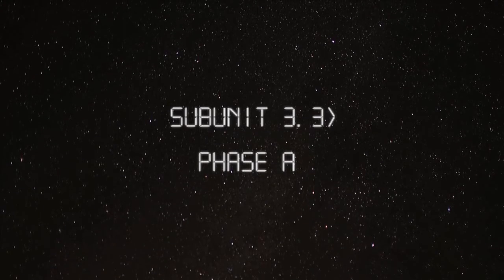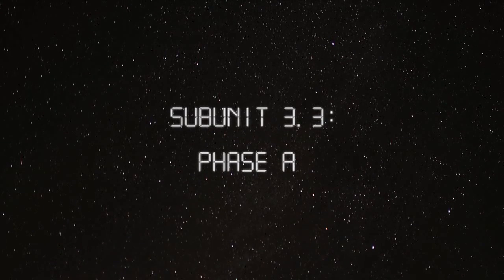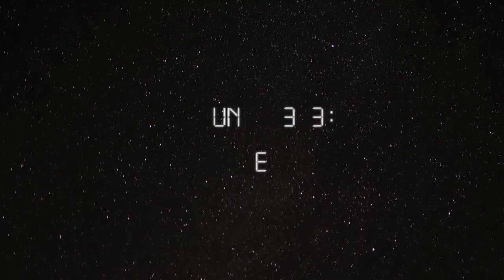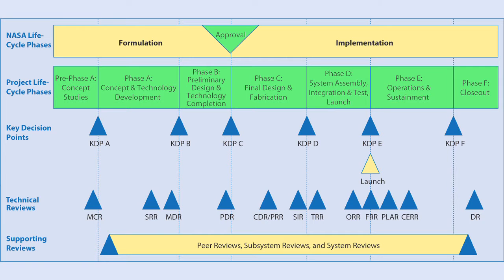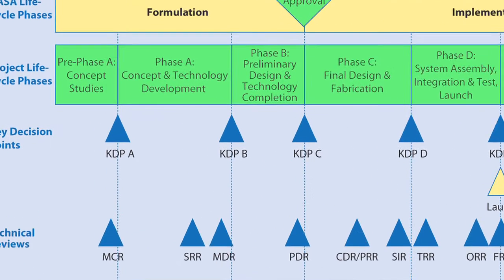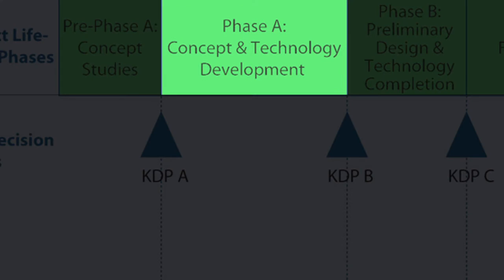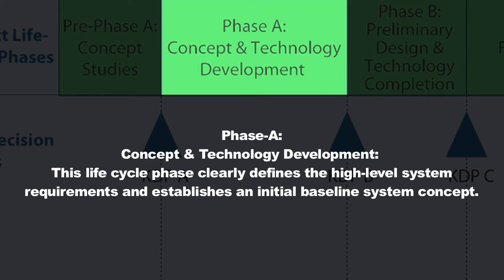Subunit 3.3, Phase A. Let's talk about what happens during Phase A. At this point, you've got some kind of baseline system requirements that you're developing, and in Phase A, you're going to really try to work on taking those high-level objectives that the stakeholders define and trying to make these requirements from them.